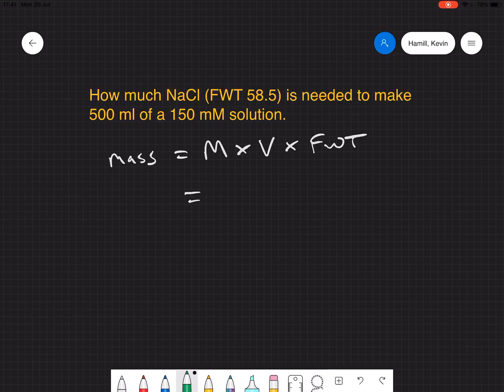That's relatively straightforward. All we need to do is identify from this statement the molarity, in this case 150 millimolar, multiply that by the volume, 500 mils, multiplied by the formula weight, 58.5.